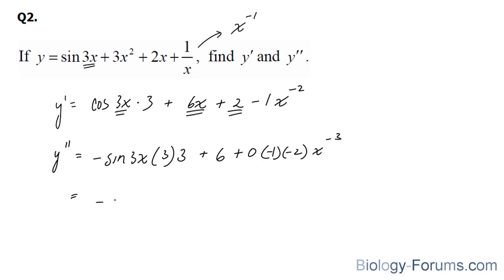And we end up with negative 9 sine 3x. 3 times 3 is 9. Negative. Plus 6. Plus, and keep in mind that there should be a plus there. So that goes to nothing. And these two multiplied give us positive 2x to the power of negative 3. So this highlighted expression represents the second derivative.